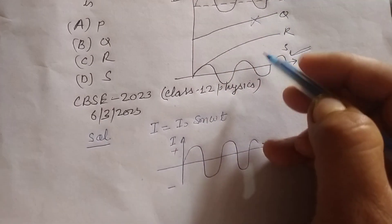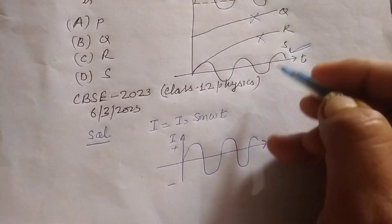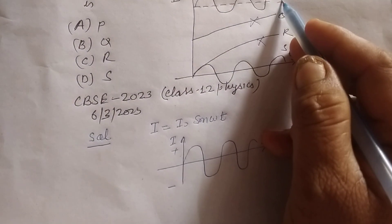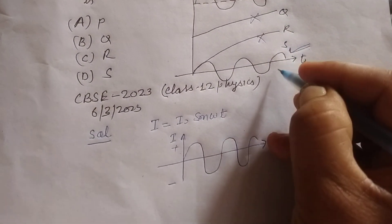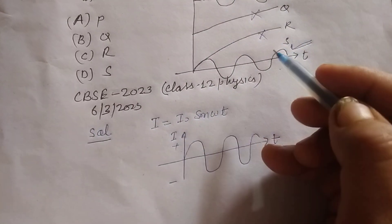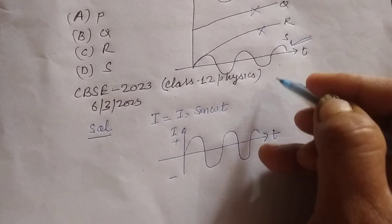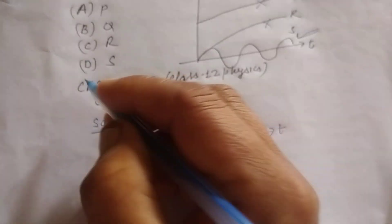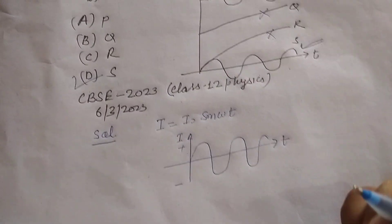This is not a graph of alternating current. This is also not a graph of alternating current. Here time is also not given, but the graph of this device shows alternating current. Therefore the answer to this question is D.